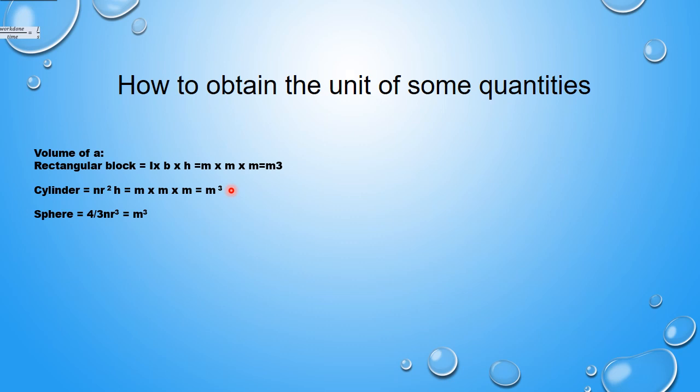For a sphere, volume is (4/3)π r³. The cube means M × M × M, giving cubic meters. For a cone, volume is (1/3)π r² l, where r is the radius and l is the slant height. Since r² gives M × M, and l is also a distance in meters, multiplying all three gives cubic meters as the unit for a cone's volume.